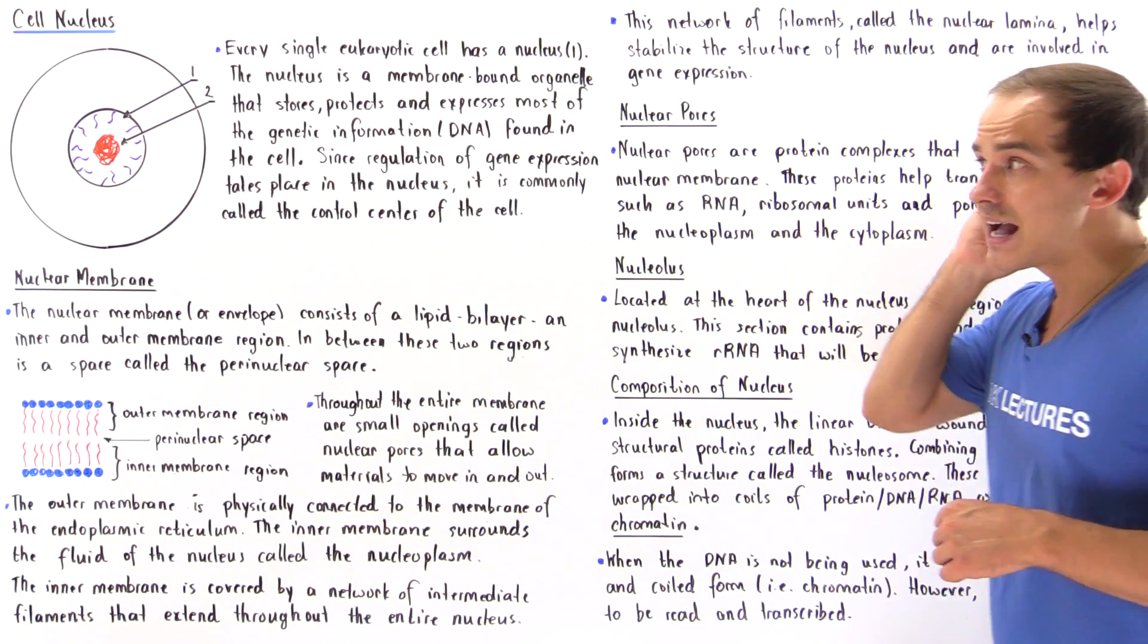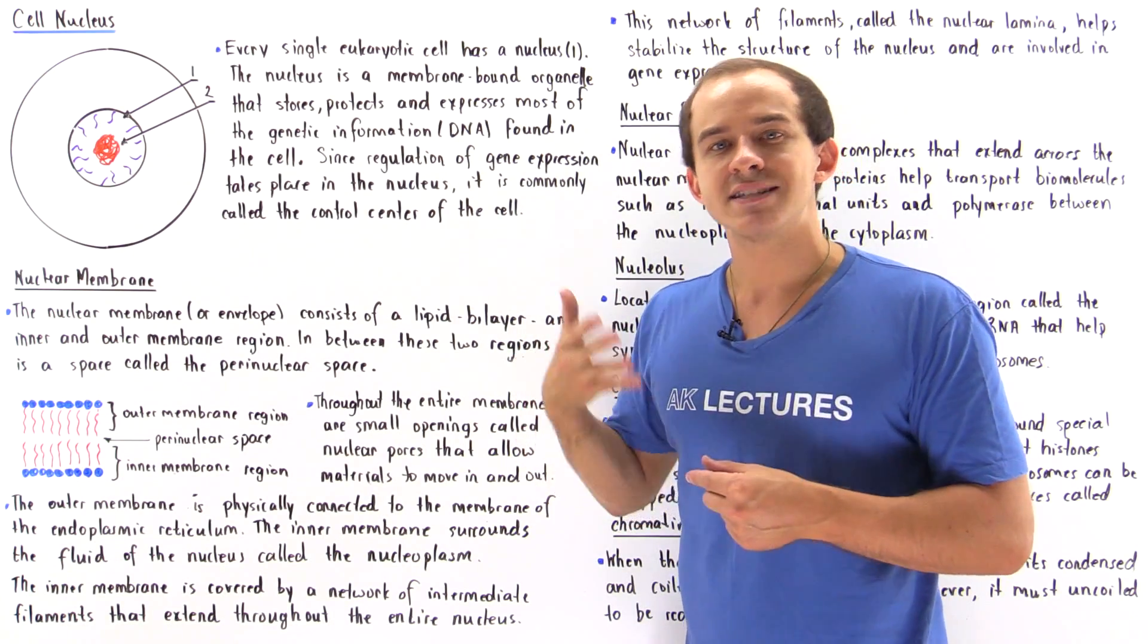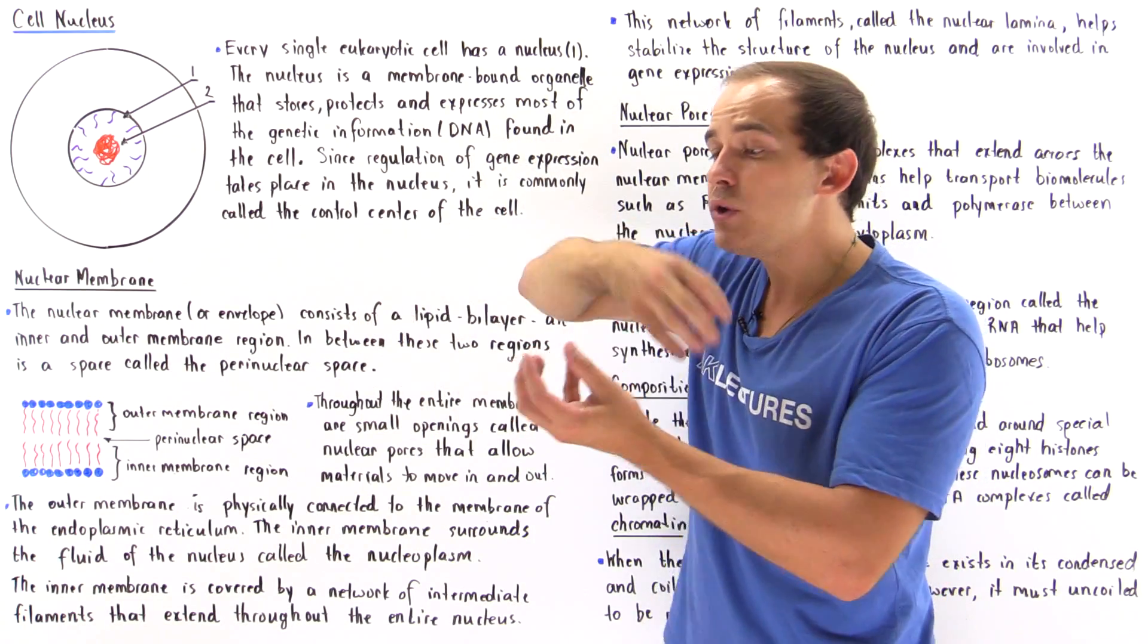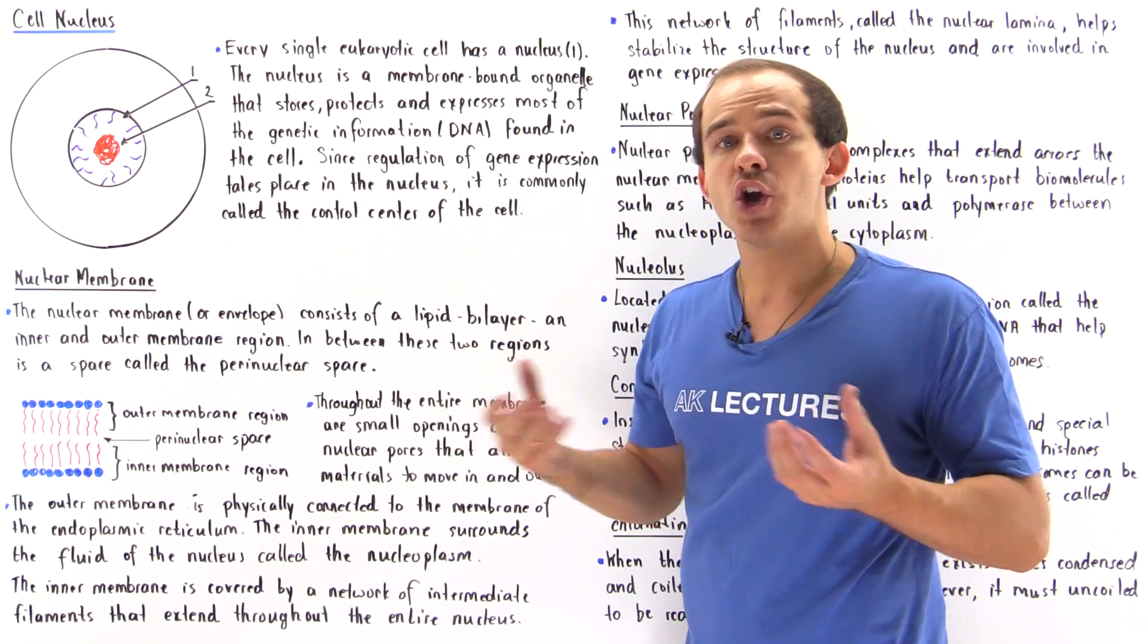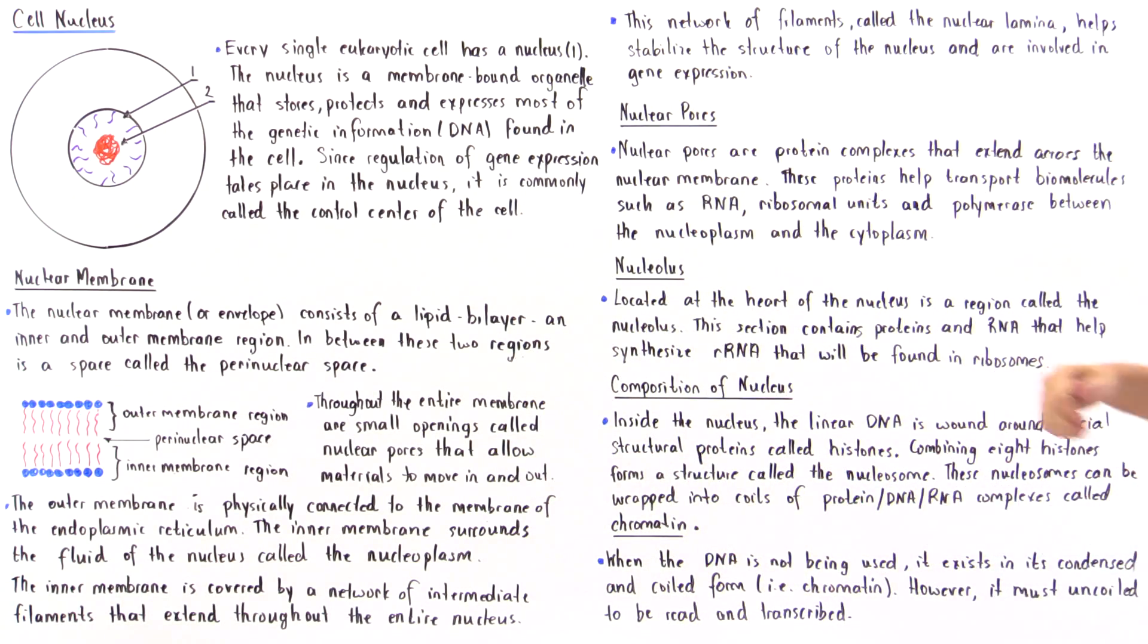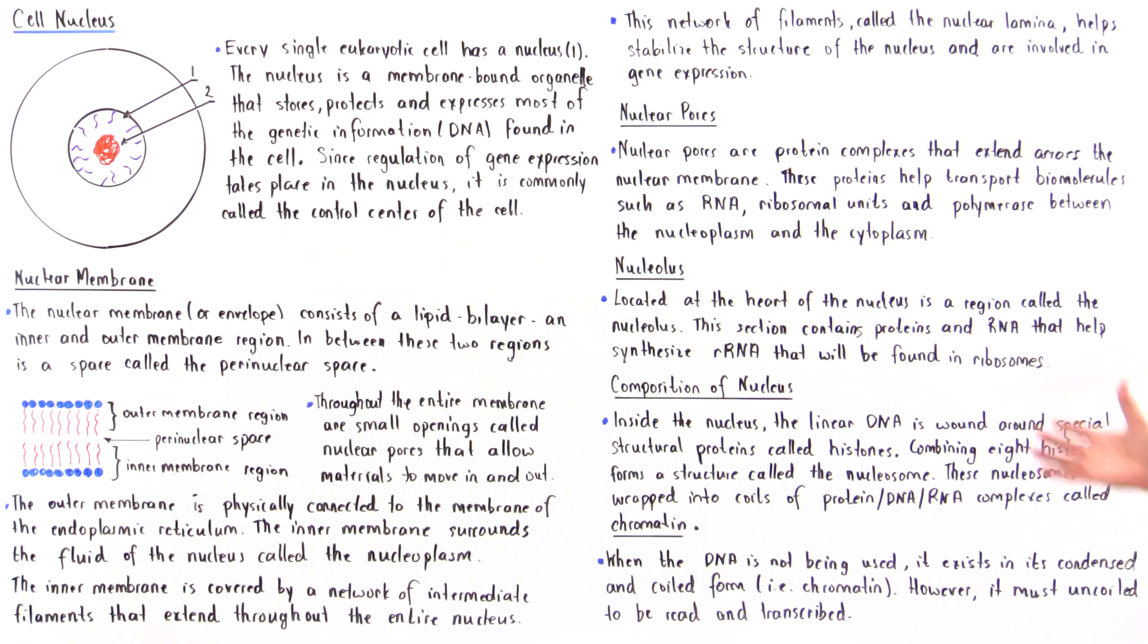What happens inside the nucleus is we take our linear DNA and we wind it around special proteins known as histones. We take the histones, connect them, and coil them further to create a structure known as the chromatin, which is a very condensed version of our linear DNA. Combining eight histones forms a structure known as the nucleosome, and these nucleosomes can be wrapped into coils and super coils of complexes of protein, DNA, and RNA called chromatin.